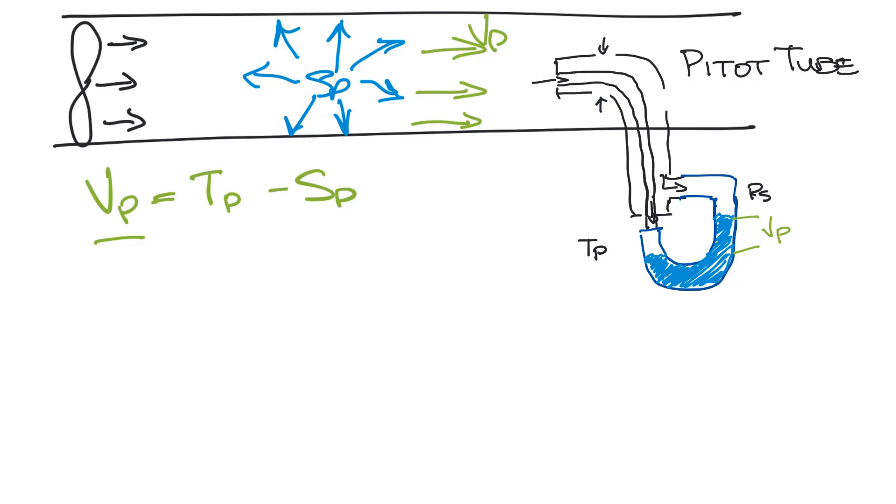You can also take the static pressure measurement on the back side of the pitot tube. You'll see this a lot in VAV box airflow sensors.